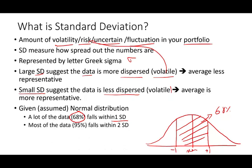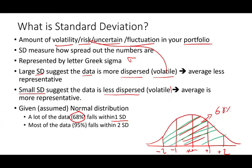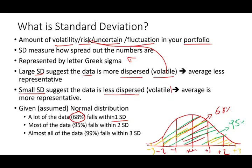Most of the data falls between two standard deviations. If we go to minus two and plus two, 95% of the expected return falls within two standard deviations, because now we're increasing the range. And almost all the data — 99% — falls within minus three to plus three standard deviations. Once we increase the standard deviation range, it encompasses nearly everything — approximately 99% of the returns within three standard deviations.